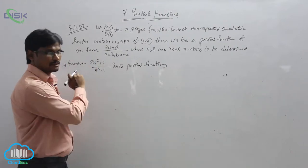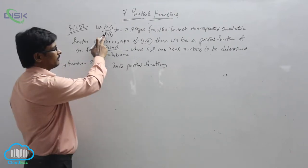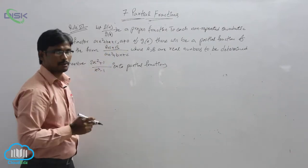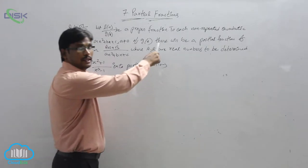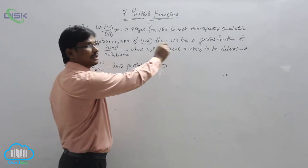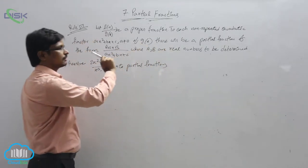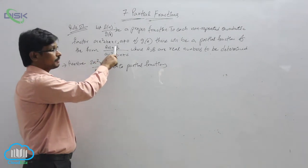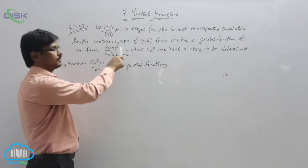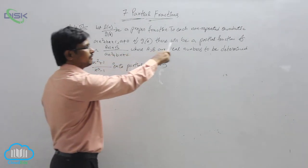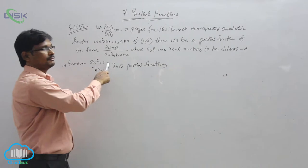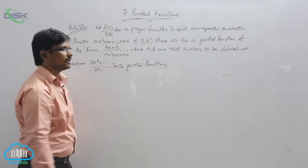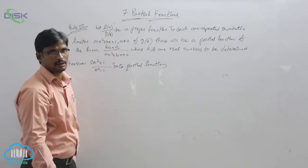The third rule: for f(x) divided by g(x) as a proper fraction, to each non-repeated quadratic factor of the form ax² + bx + c in g(x), there will be a partial fraction of the form where A and B are real numbers we have to determine.